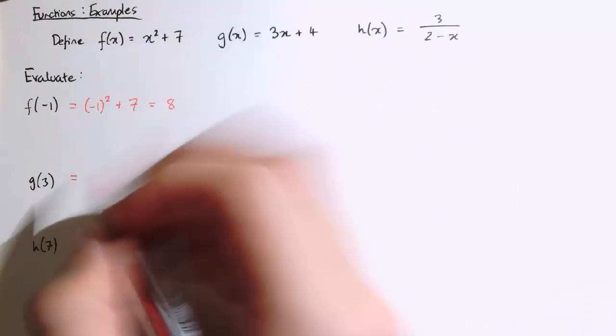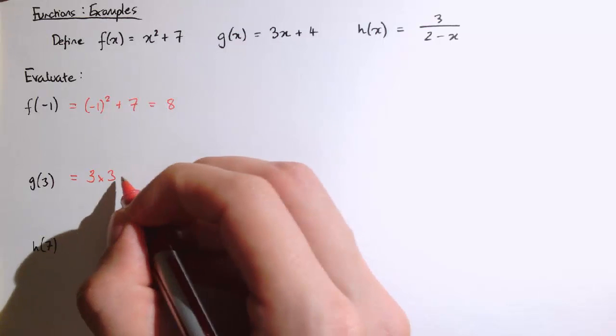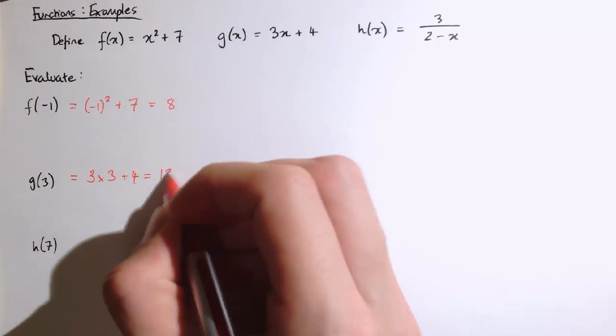g of 3, that's 3x plus 4, so we're just going to replace x with 3 this time. 3 times 3 plus 4 is 13.